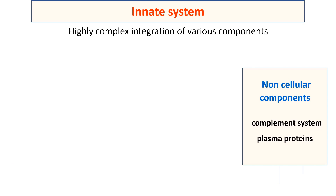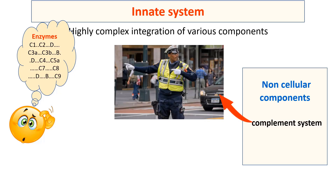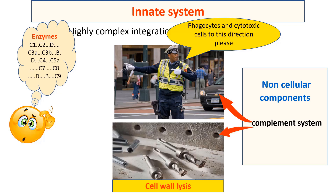The non-cellular components of the innate immune system include the complement system and plasma proteins. The complement system is composed of around 30 proteins that are further activated through complicated overlapping pathways. Among their functions are directing phagocytic and cytotoxic cells toward invading antigens, and some complement enzymes can penetrate and destroy the invaders' cell walls.